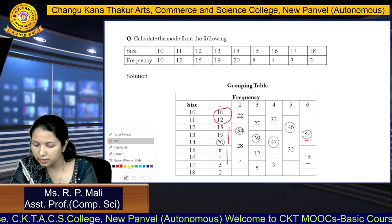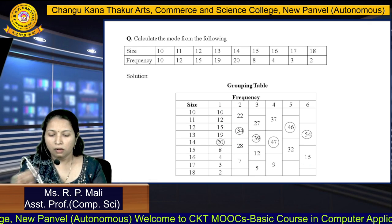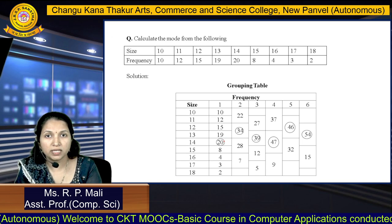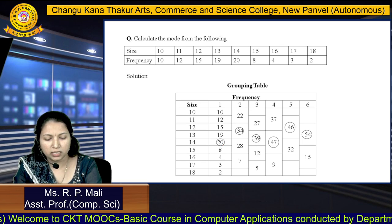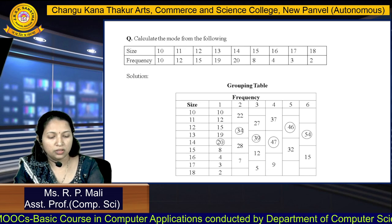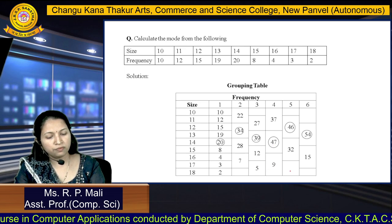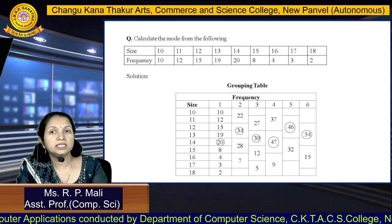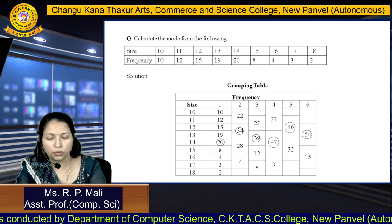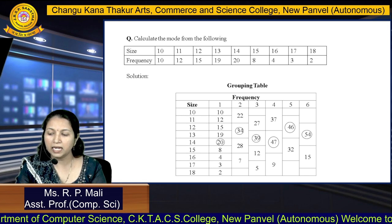After finding all the frequency sums, circle the highest frequency in each column: column 1 — 20 is the highest; column 2 — 34; column 3 — 39; column 4 — 47; column 5 — 46; column 6 — 54. We will use these maximum frequencies for the analysis table.